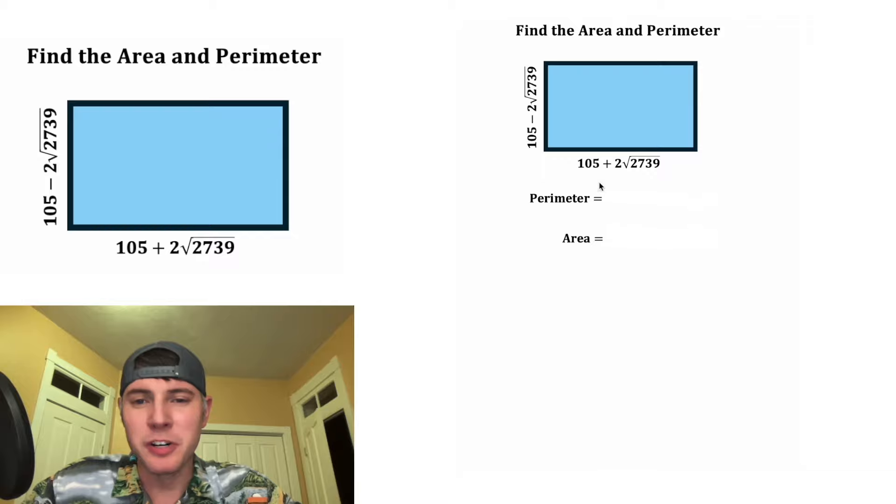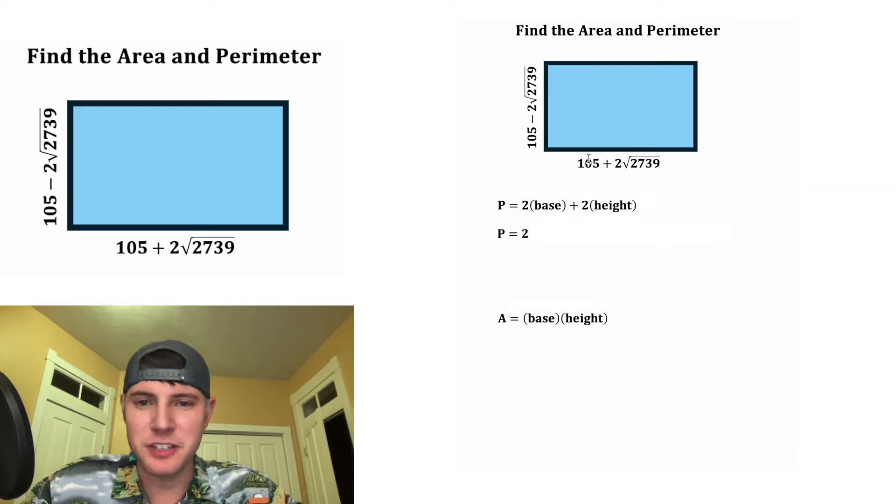It wants us to solve both the perimeter and the area. The perimeter is 2 times the base plus 2 times the height, and the area is the base times the height. So let's do the perimeter first. In the place of the base, let's plug in this number, and in the place of the height, let's plug in this number.